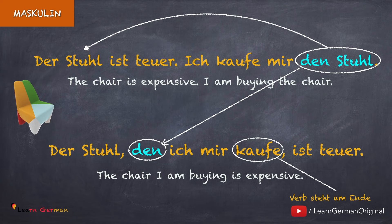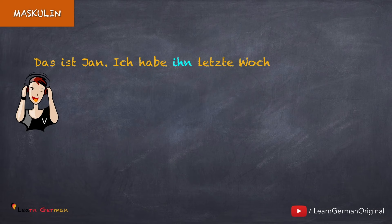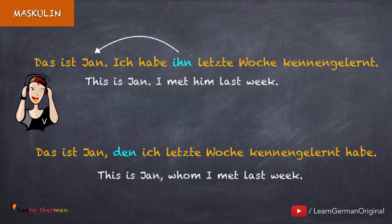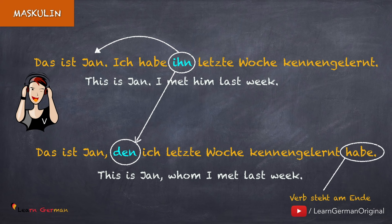Das Gleiche gilt auch wenn wir ein Akkusativ-Personalpronomen haben. Zum Beispiel: Das ist Jan — ich habe ihn letzte Woche kennengelernt. Für Jan gibt es in dem zweiten Satz ein Akkusativpronomen: ihn. Wenn wir einen Relativsatz formulieren, dann sagen wir: Das ist Jan, den ich letzte Woche kennengelernt habe. Also wir benutzen nicht ihn, sondern den als Relativpronomen. Das Verb steht am Ende. Akkusativ-Personalpronomen und Akkusativ-Relativpronomen sind zwei verschiedene Sachen.